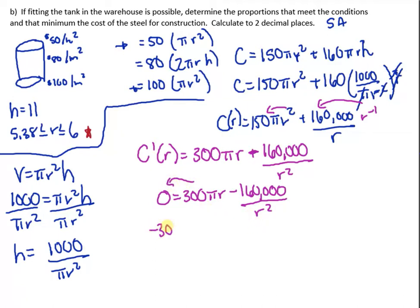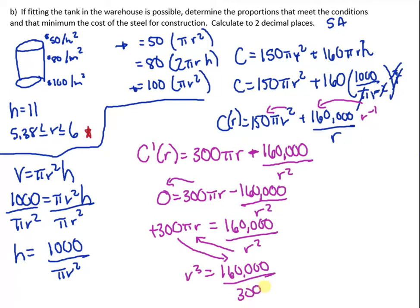Bring that over to get 300 pi r equals 160,000 over r squared. Bring up that r squared, bring down the 300 pi. I get r cubed equals 160,000 over 300 pi. I get r cubed equals 169.85 and some change. Leaving that in my calculator, I get r equals, we want to cube root both sides. I get r equals 5.54.